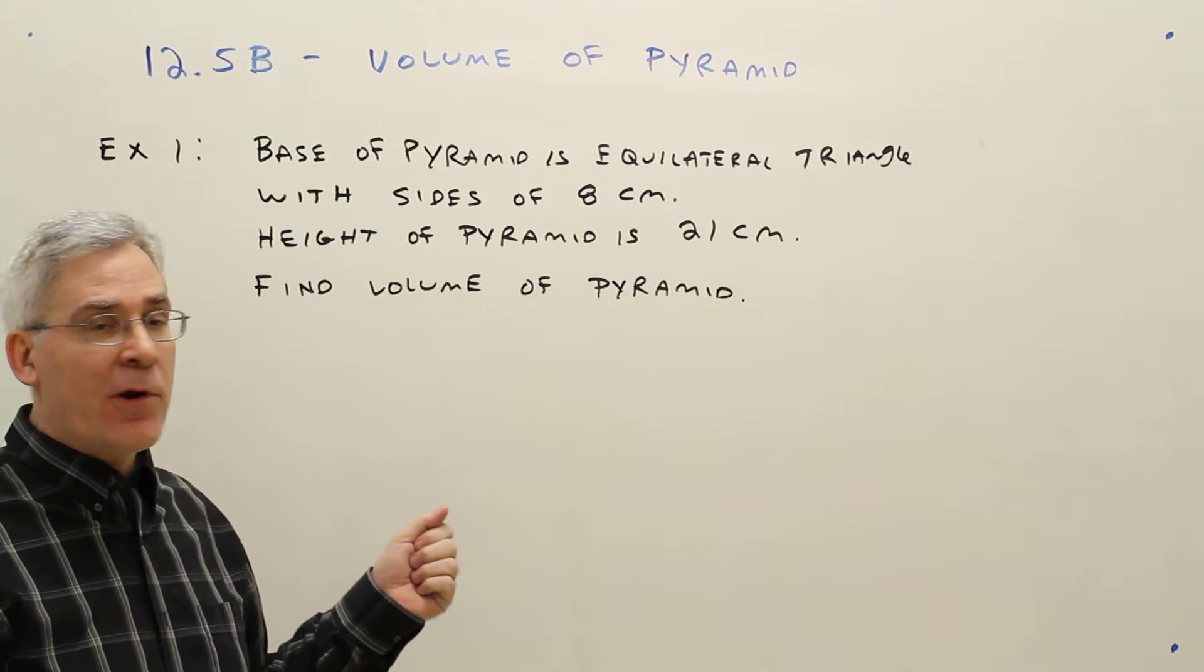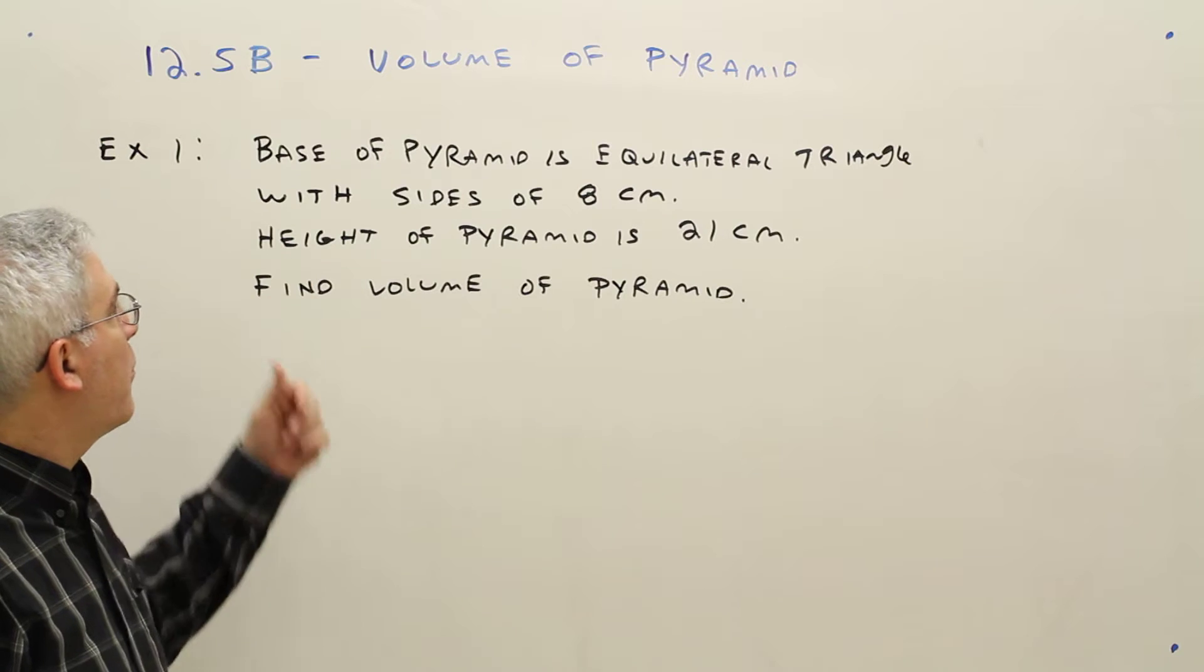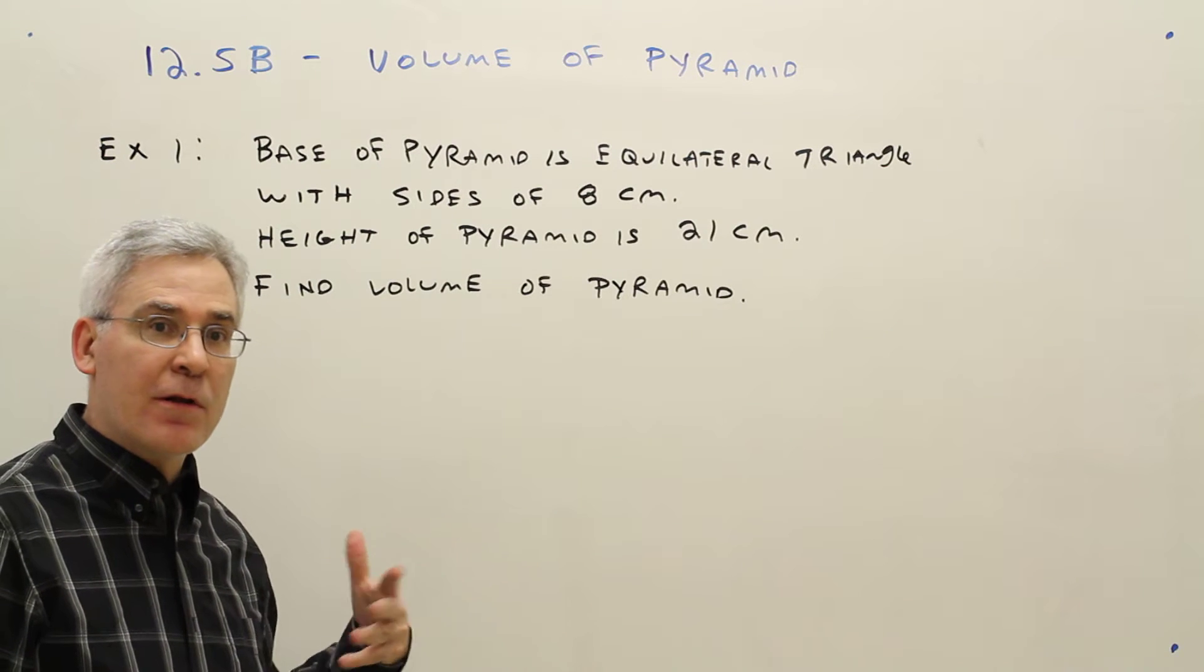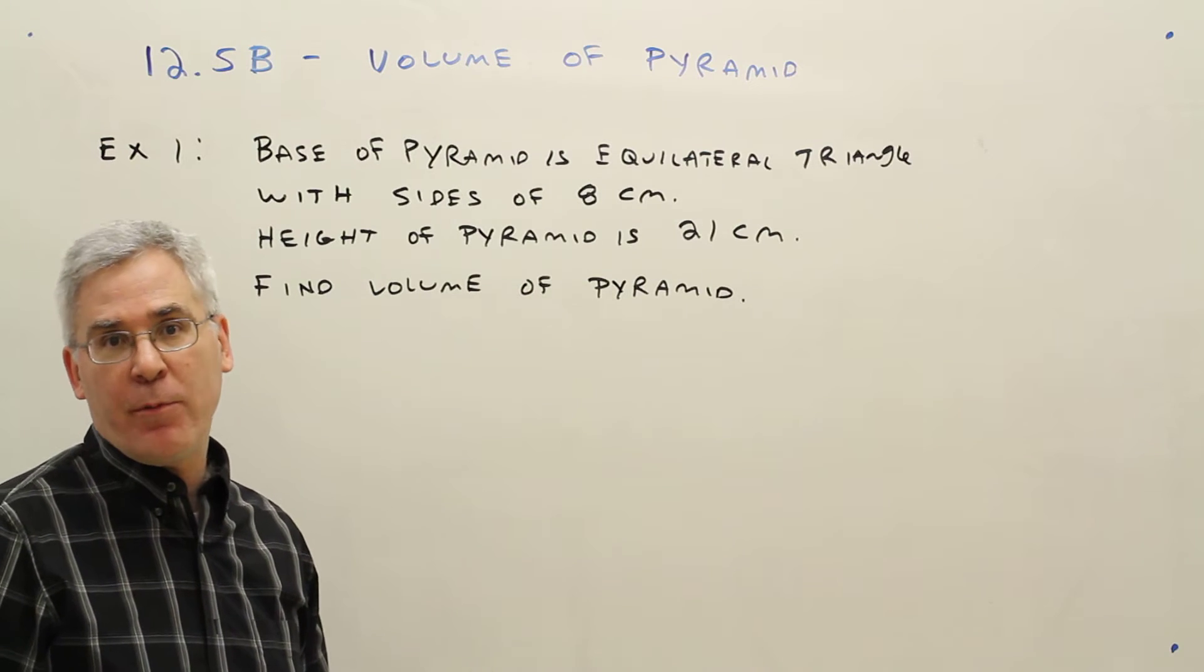The base of a pyramid is an equilateral triangle with sides of 8 centimeters. The height of the pyramid is 21 centimeters. Find the volume of the pyramid.